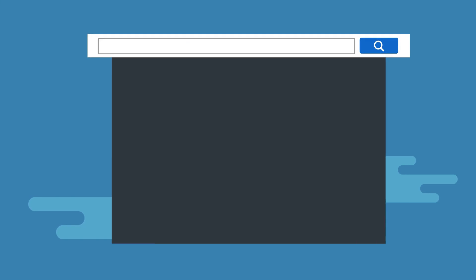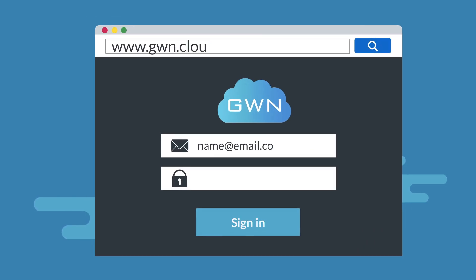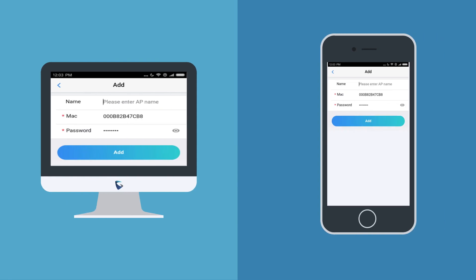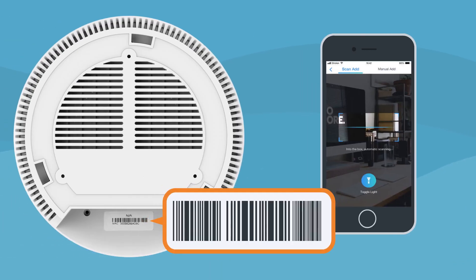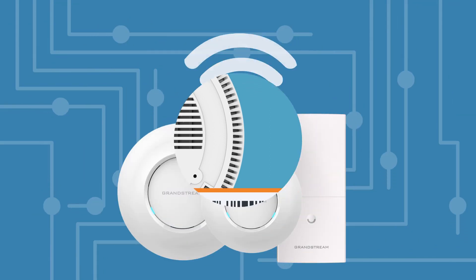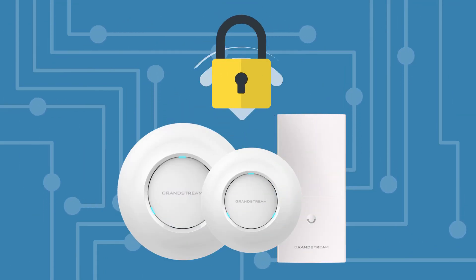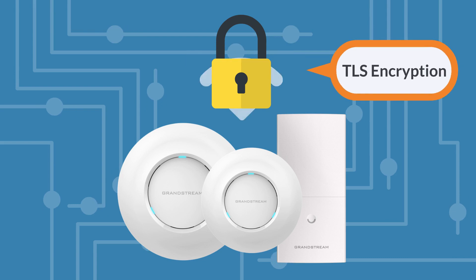Simply create an account on www.gwn.cloud, then input your Grandstream Wi-Fi AP's information, or scan the 2D barcode using the mobile app. Secure networks can be deployed in seconds, thanks to our bank-grade TLS encryption.